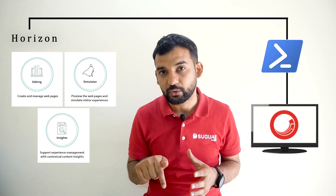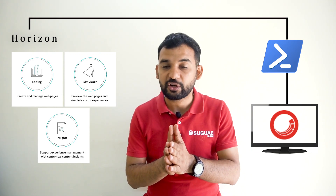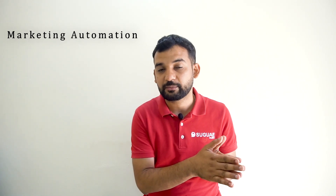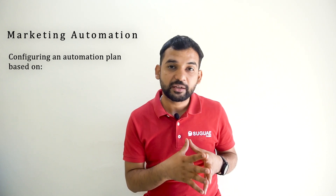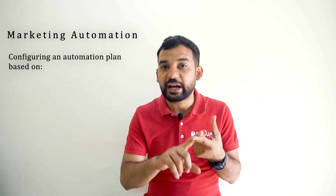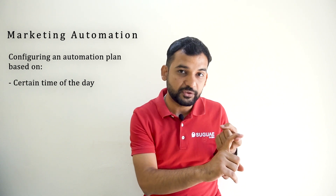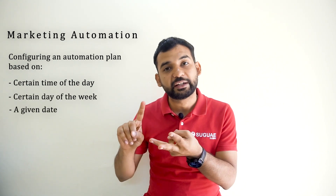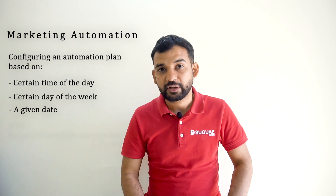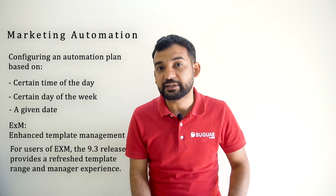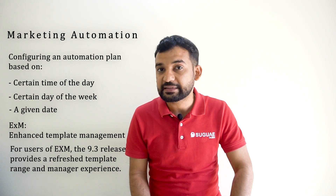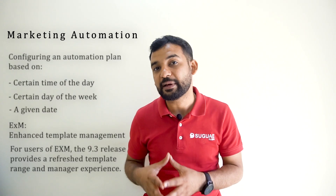Horizon is not part of the Sitecore 9.3 installation. It's a separate module which you have to download and install using Windows PowerShell. I have shared the download link in the description below. If you have any questions with the installation, you can reach out to me in the comments below. Moving on to Marketing Automation — there are a few new features added in the marketing automation plan. The 9.3 release provides the ability to use date and time in the criteria for entry in the marketing automation plan. Marketers can use three time-driven criteria: based on a certain time of the day, based on a certain day of the week, or at a given date. There is also Enhanced Email Templates — the out-of-the-box email templates have been modernized and new templates have been released for EXM email messages.